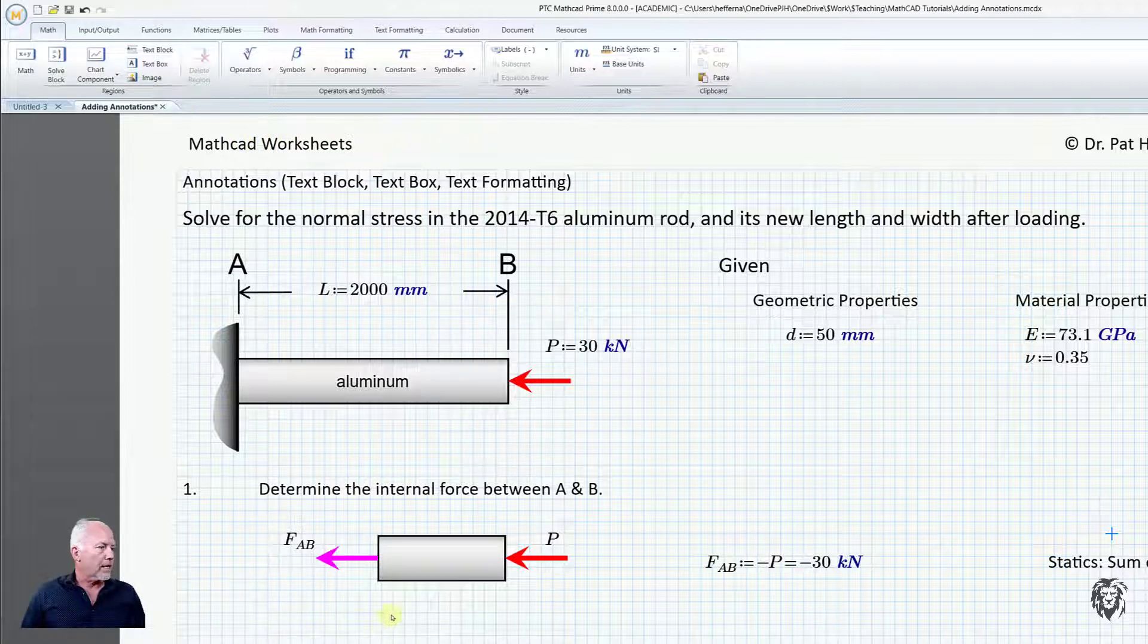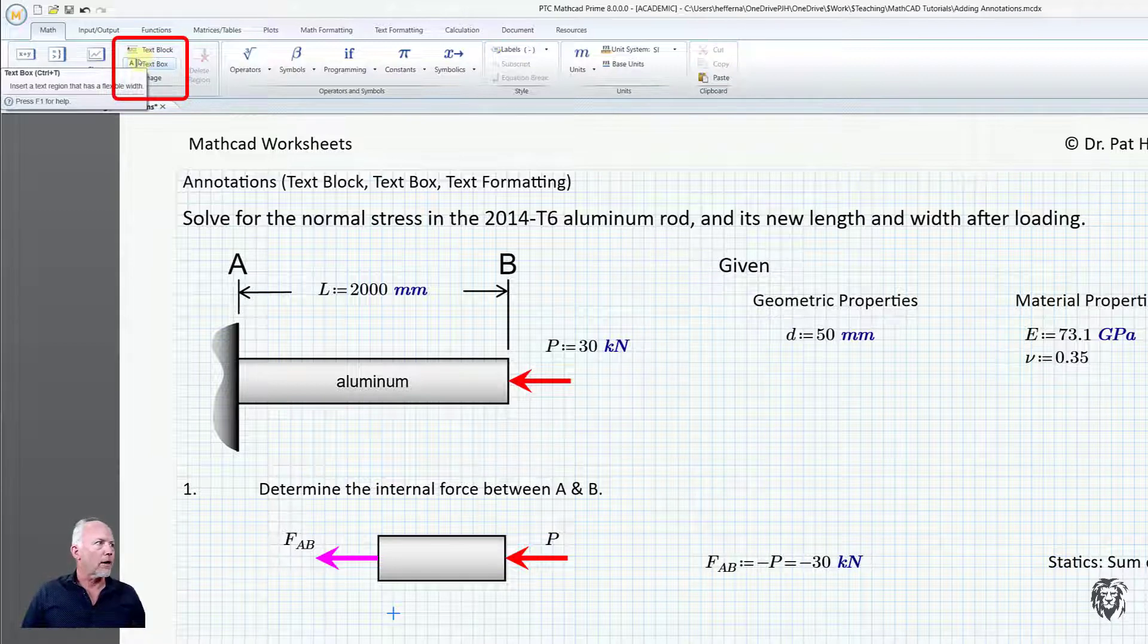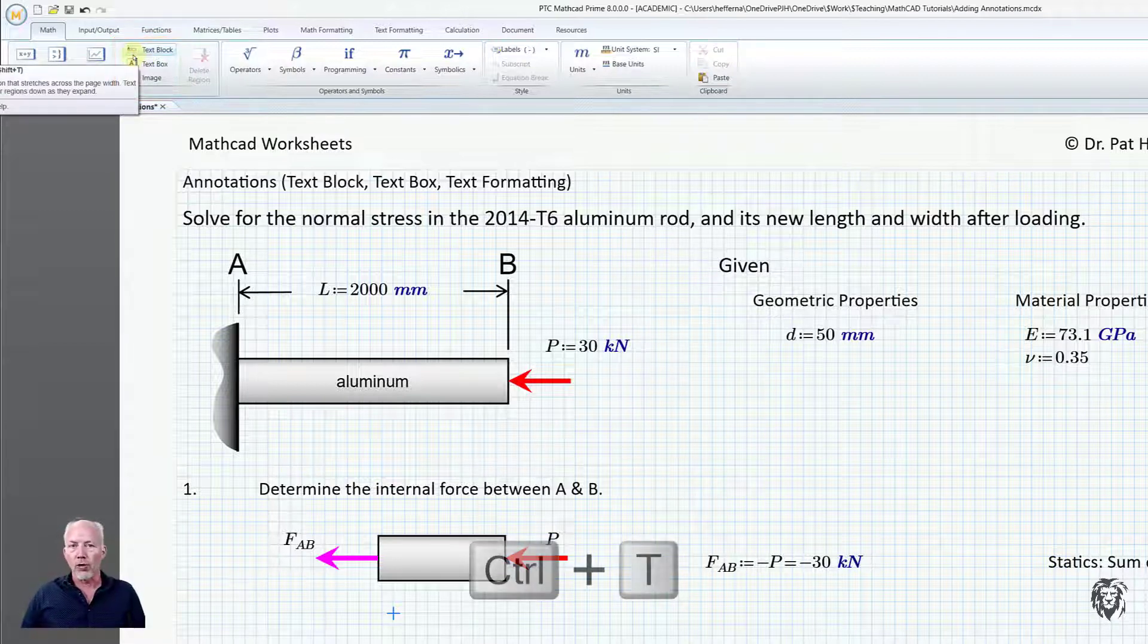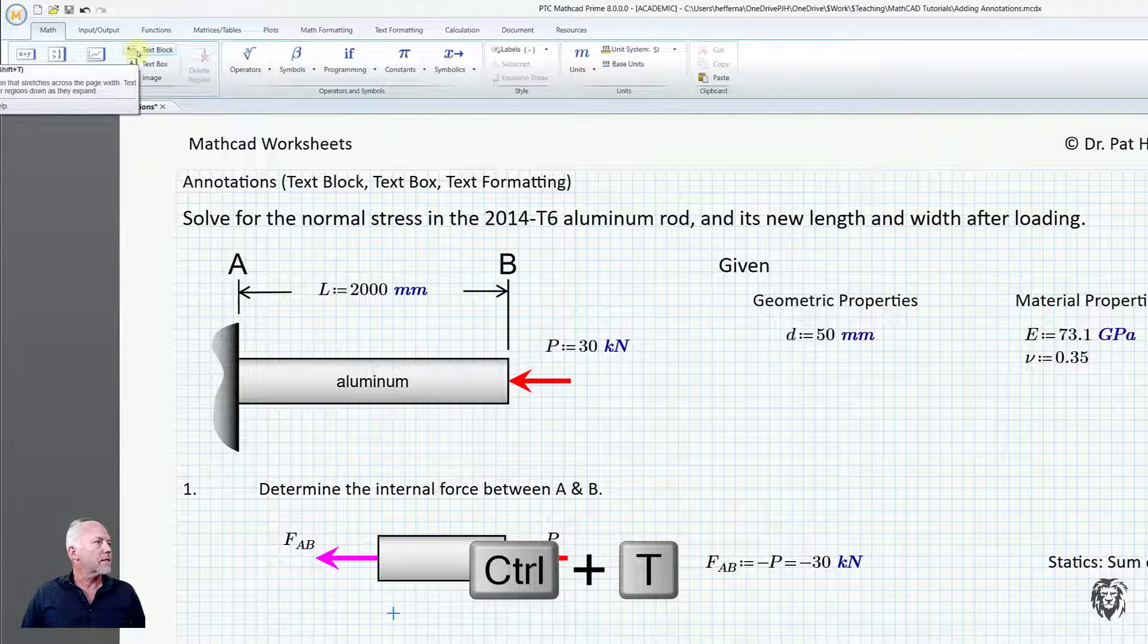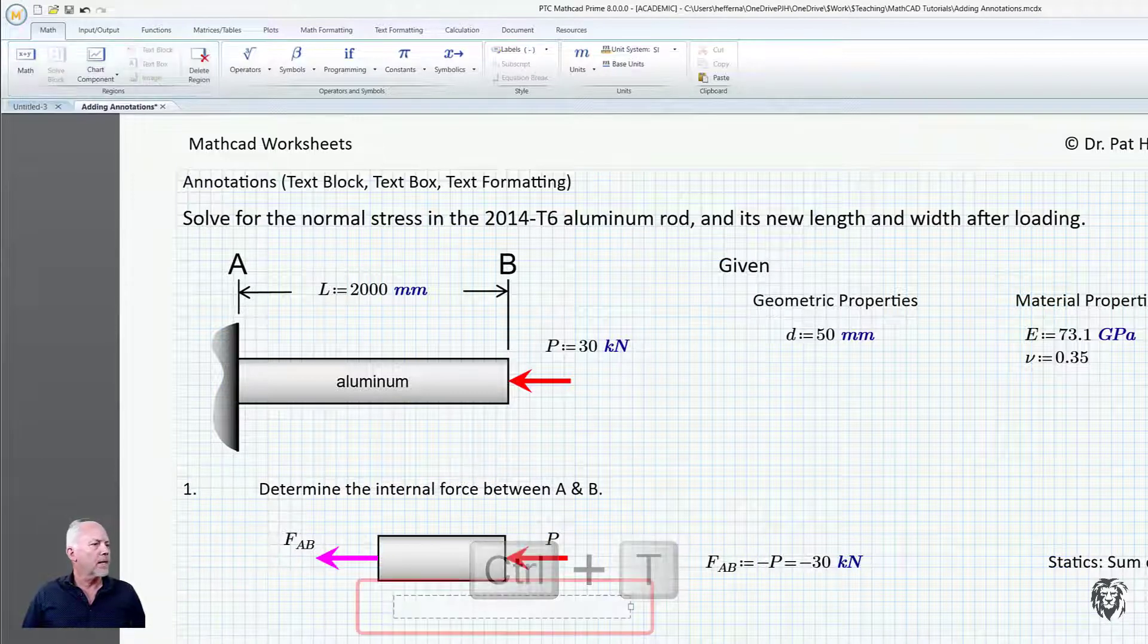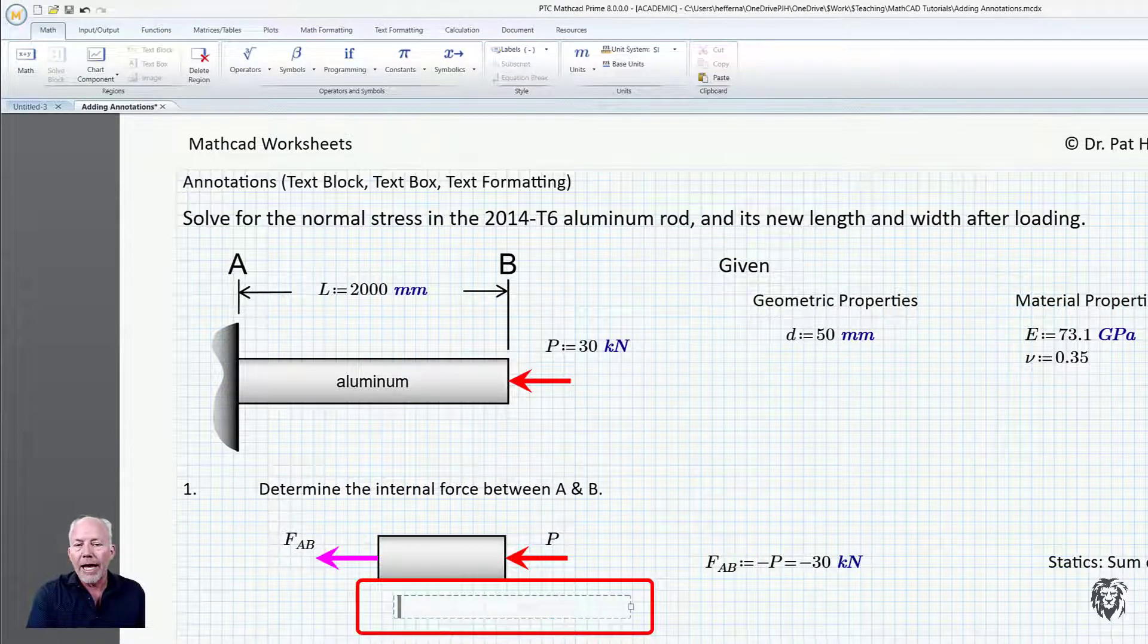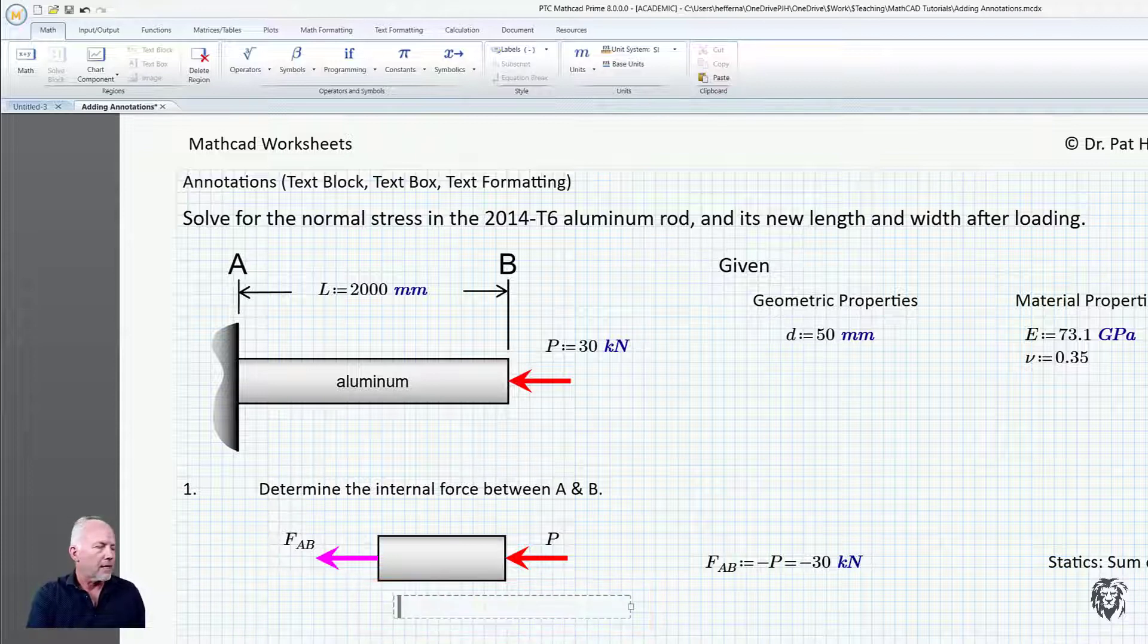So again I'm going to put my cursor about where I want it, go up, choose text box or quite often I will just use the shortcut Ctrl T. So text box and it will have a default settings and we're just going to label this.